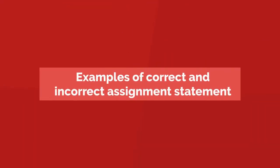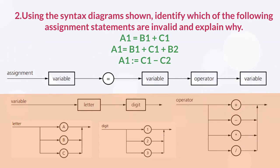Examples of correct and incorrect assignment statement. In programming languages, assignment statement is used to assign a value to a variable. It might be as simple as A is equal to 5, or in form of an expression like A is equal to B plus C.